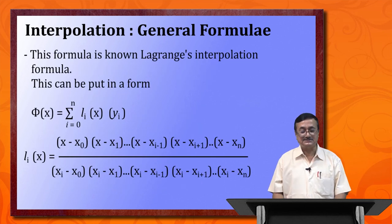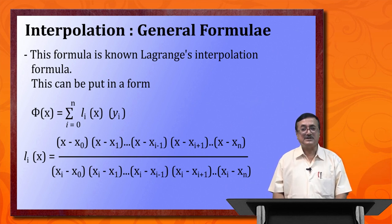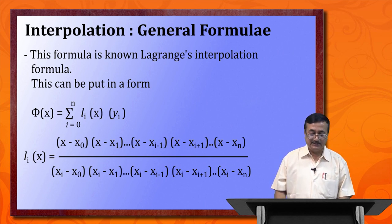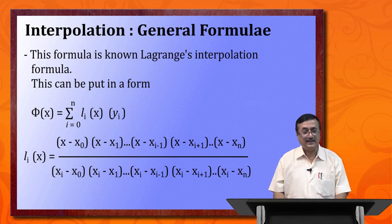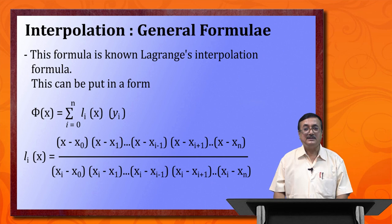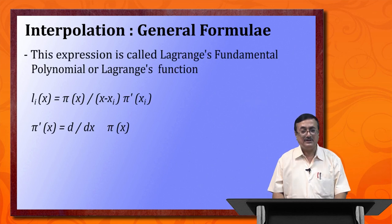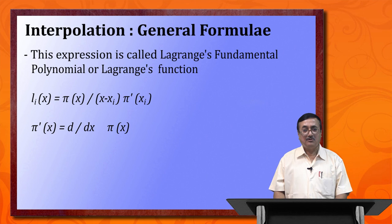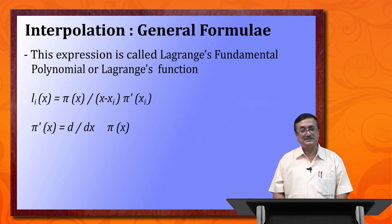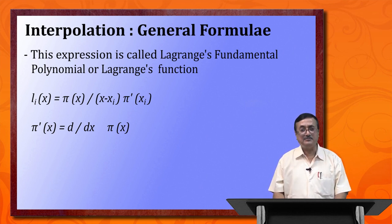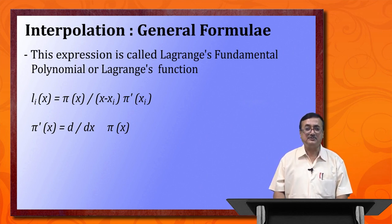This is known as the Lagrange's interpolating polynomial, and it can be put in the simple form phi(x) = summation from i=0 to n of L_i(x) * y_i, where L_i(x) is given by its defining expression. This is called Lagrange's fundamental polynomial, or Lagrange's function, or Lagrange's basic polynomial. Dear students, please keep in mind that this is a very important polynomial which will be used in future discussions and many other formulations including numerical integration.